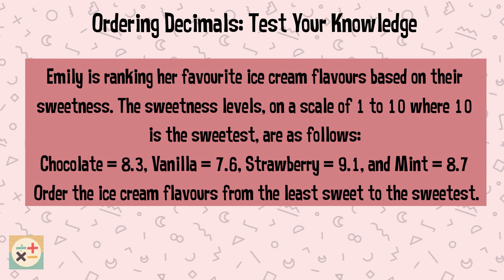Question 7. Emily is ranking her favourite ice cream flavors based on their sweetness. The sweetness levels, on a scale of 1 to 10 where 10 is the sweetest, are as follows: chocolate 8.3, vanilla 7.6, strawberry 9.1, and mint 8.7. Order the ice cream flavors from the least sweet to the sweetest.